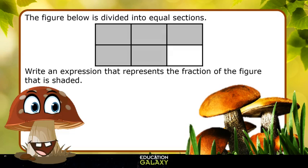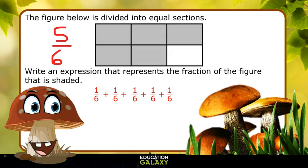Let's try this problem. The figure below is divided into equal sections. Write an expression that represents the fraction of the figure that is shaded. Well, 5 of the 6 sections are shaded, so we're looking for an expression that equals 5 sixths. We could take each section separately and have 1 sixth plus 1 sixth plus 1 sixth plus 1 sixth plus 1 sixth. That would equal 5 sixths.